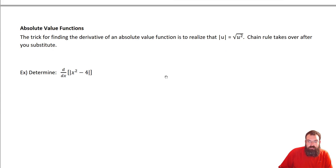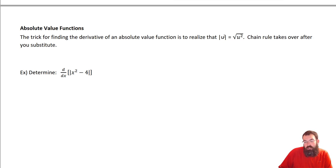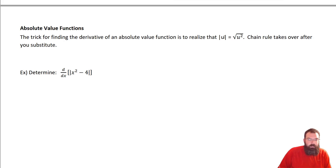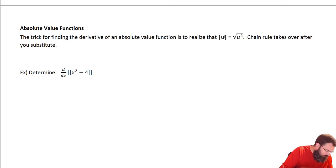So — Absolute Value functions. There is a little bit of a trick, and it's actually not too bad. An absolute value of something is equal to the square root of x squared. The absolute value of u is equal to the square root of u squared. Then the Chain Rule just takes over from there after you substitute. This is really the beginning of our u-substitution.